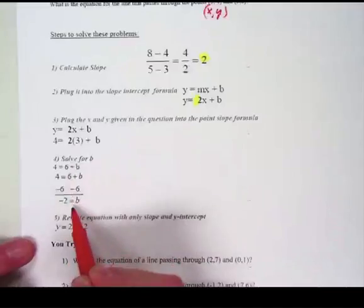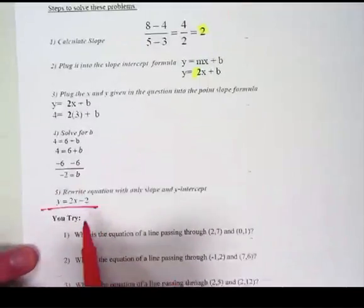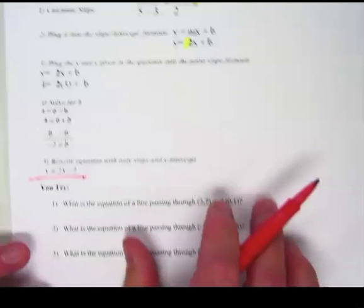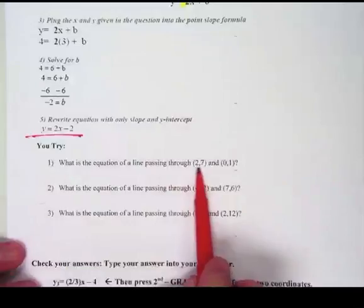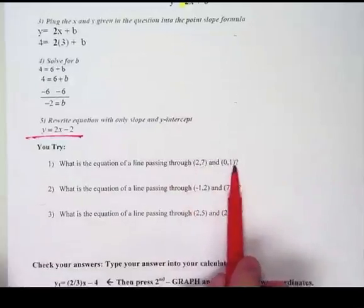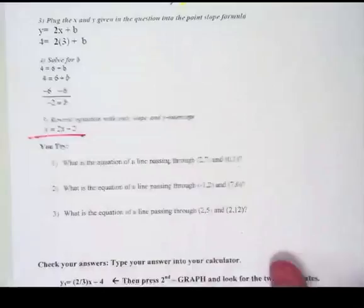And then solve for b, and you end up with b being negative 2, and you rewrite the whole equation. It looks just like this, y equals 2x minus 2. Now, what I would like you to do is do the same process with this first one. Here is your first point, your second point. You can do the slope calculations and all that, and then I'll go ahead and put up the answer.